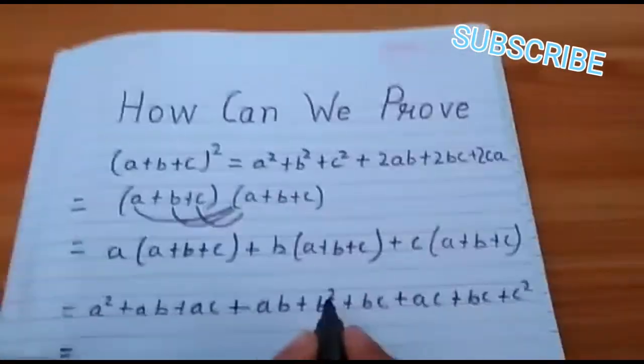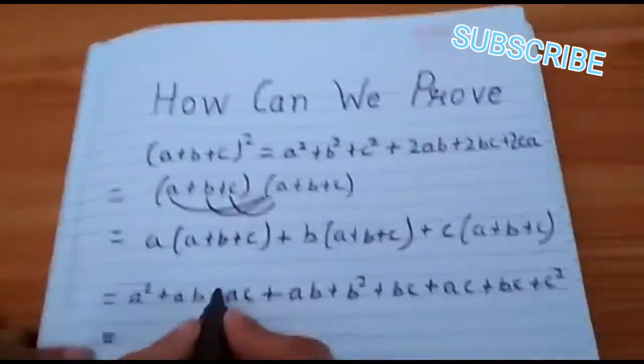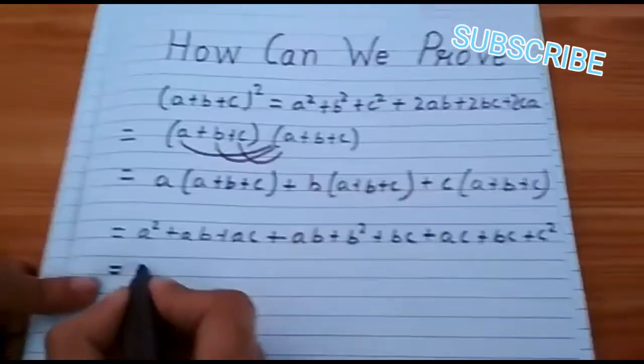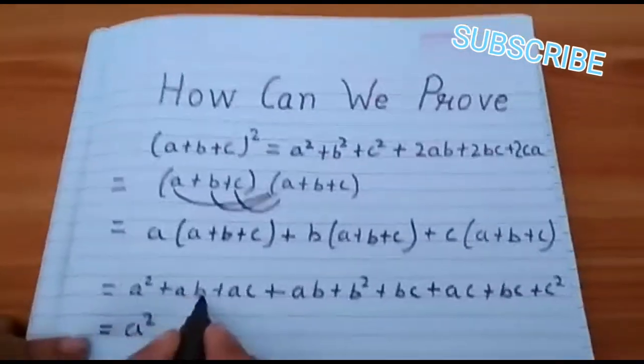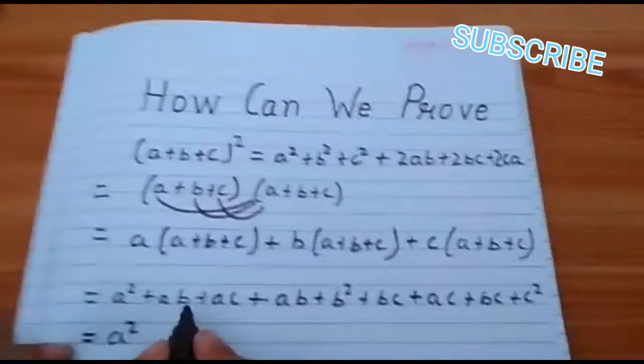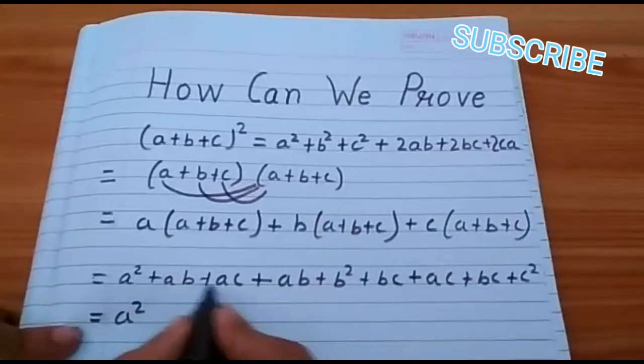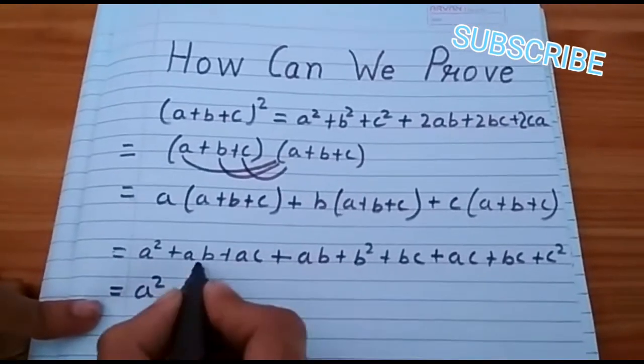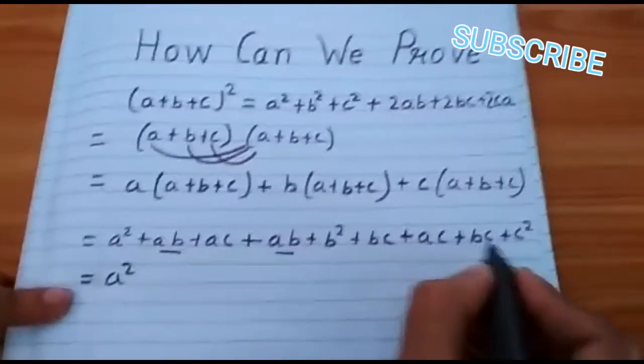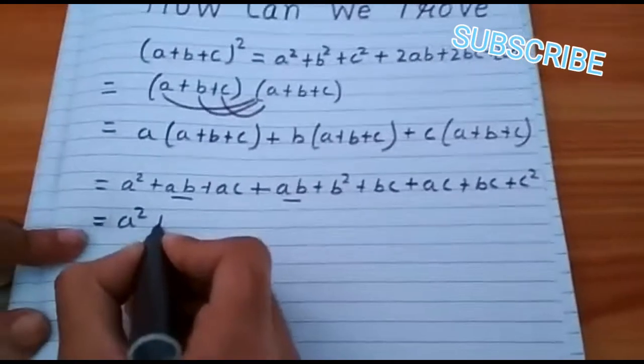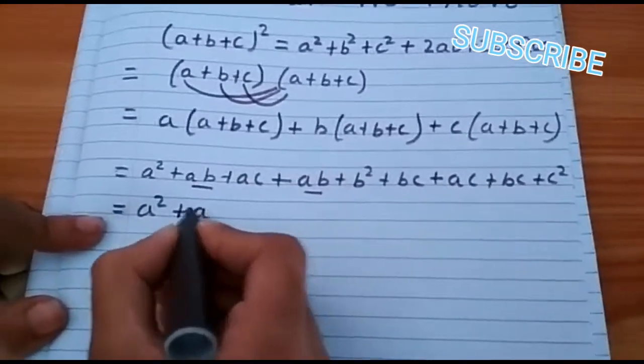Let us check how many a² is there. There is only one a². Then write a². Then how many ab is there. One ab and two ab. There is one ab, two ab. Plus 2ab.